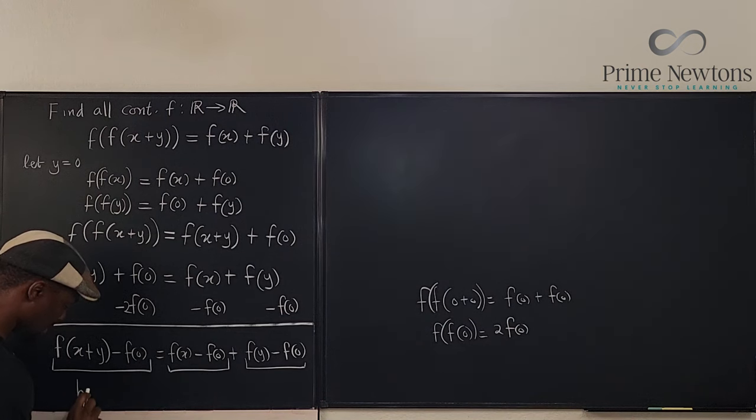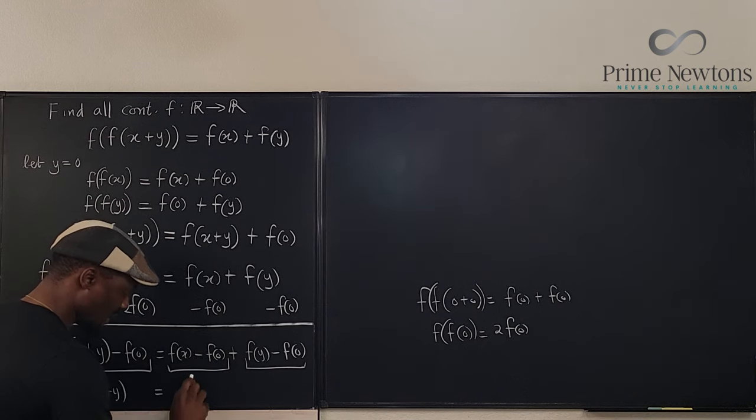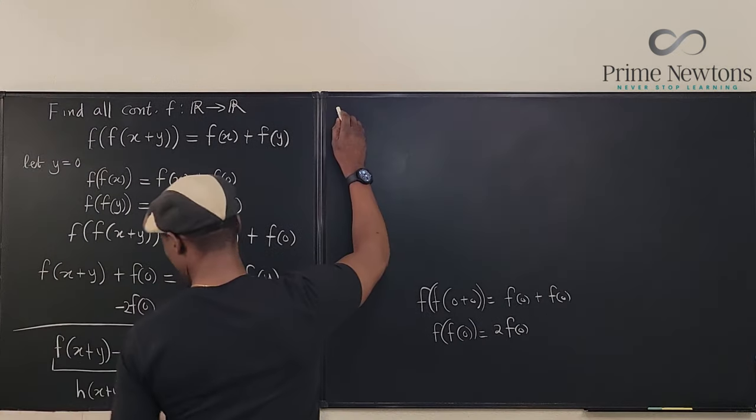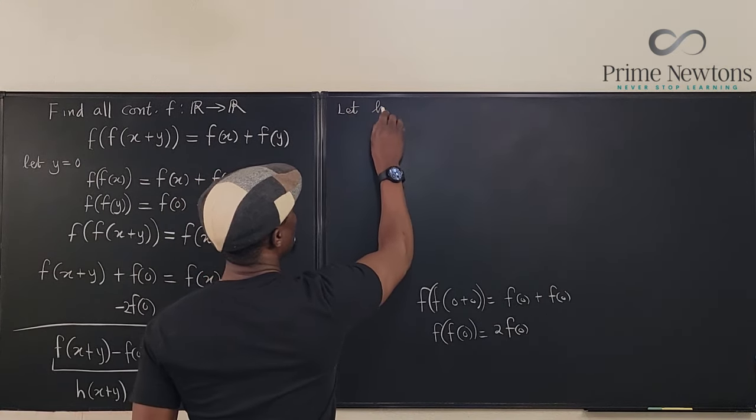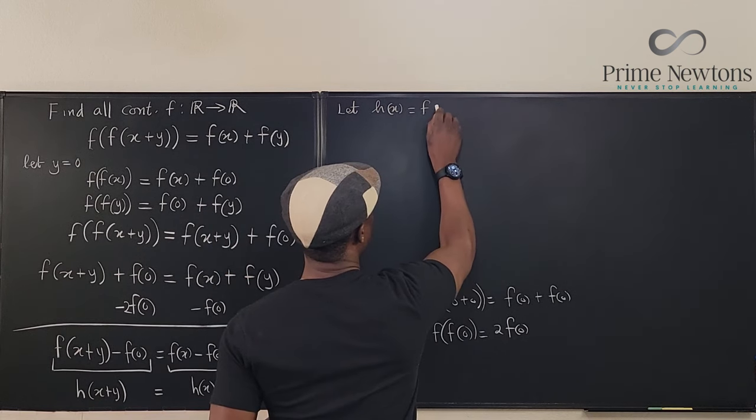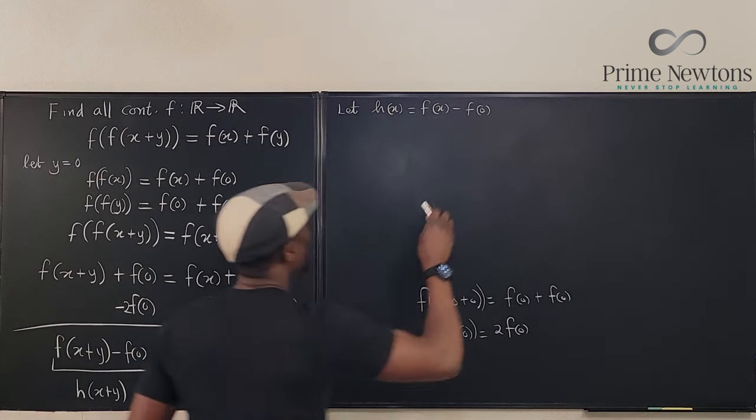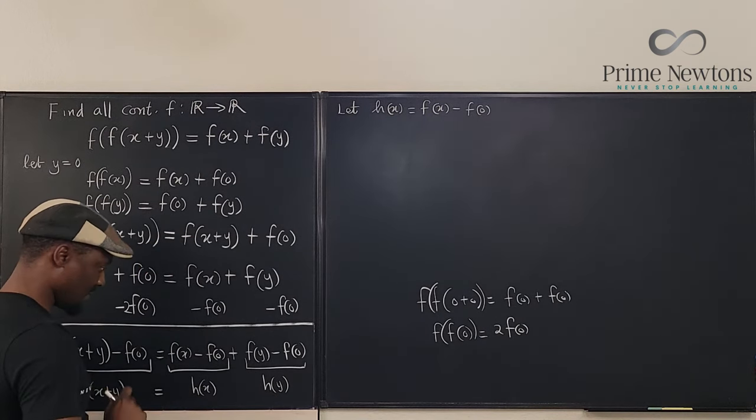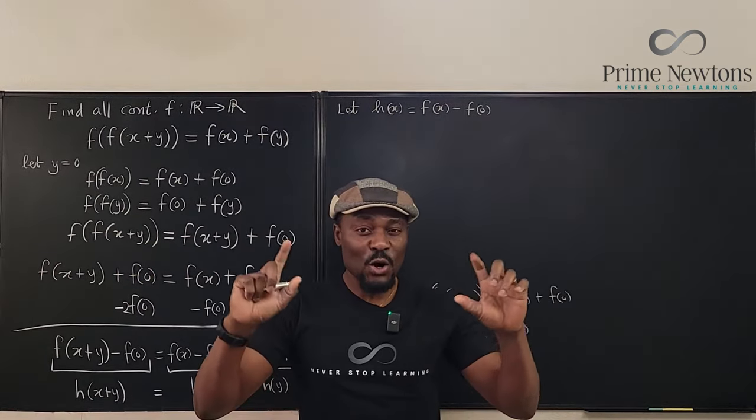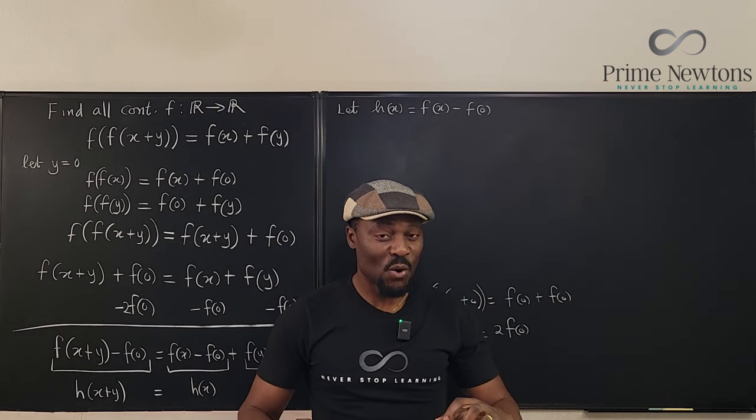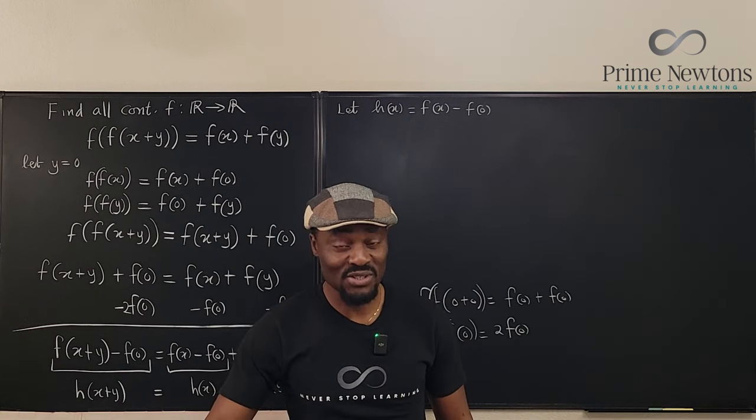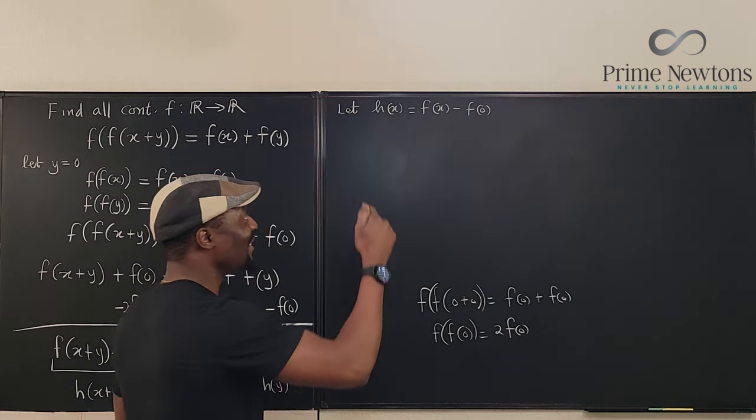Hey, let's define this as h of x plus y. We're going to define this as h of x. We're going to define this as h of y. That's what I'm going to do. So I'm going to say, let h of x be equal to f of x minus f of zero. So I am saying, this is going to be this, this is going to be this, this is going to be this. So remember what I said, the Cauchy functional equation already has a solution. If I can modify this and make it look like a Cauchy functional equation, then I have my answer. And it's beginning to look promising.